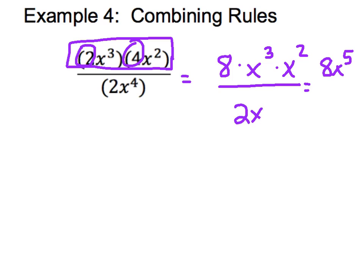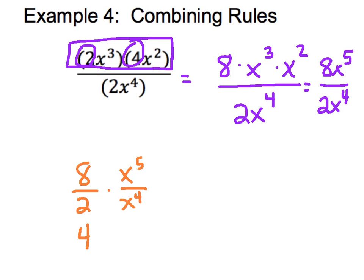On the bottom, the denominator, I still have 2x to the fourth, so I'm just going to bring that over. Now I'm going to apply my quotient rules. With my quotient, I have 8 divided by 2. I like to separate my numerical terms from my variable terms. 8 divided by 2 gives me 4. With my x terms, I have x to the fifth divided by x to the fourth. Using my quotient rule — x's are the same base — I'll subtract my exponents and get x to the first, which I can just write as x. So my final answer is 4x.